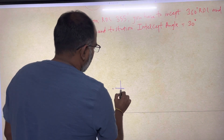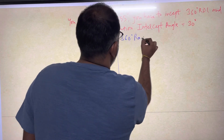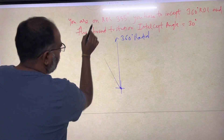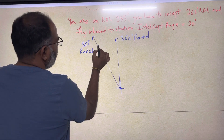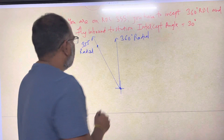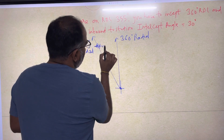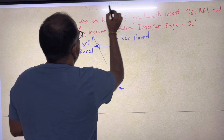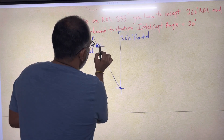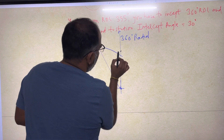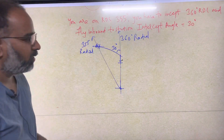Let's say this is your station and this is the north or 360 radial. Radials are always going out from the station. So this is the 355 radial. Your aircraft is here on the 355 radial. From this position you have to fly towards the 360 radial, intercept the radial at 30 degrees, and then fly inbound to the station along radial 360.